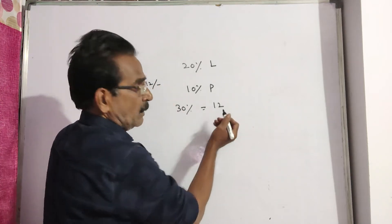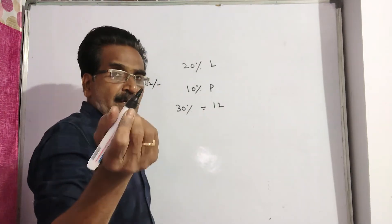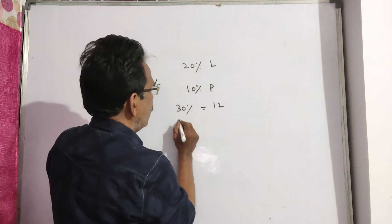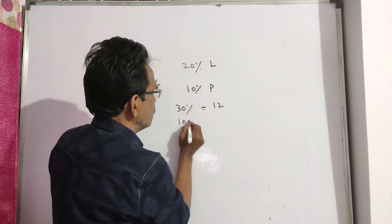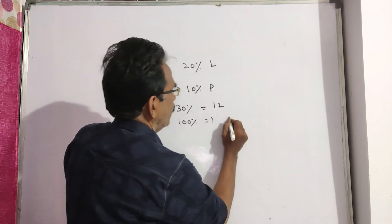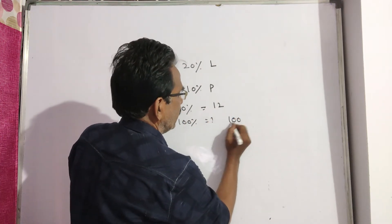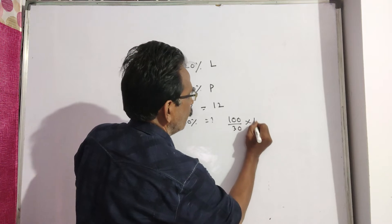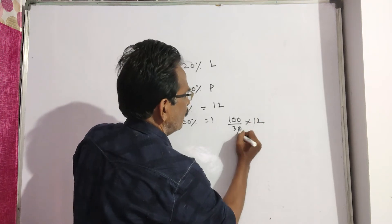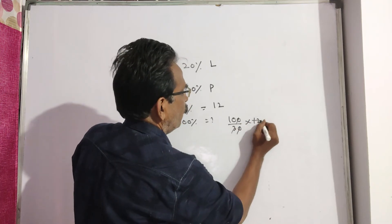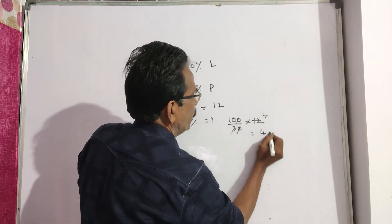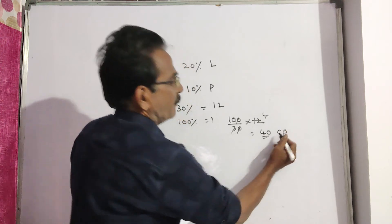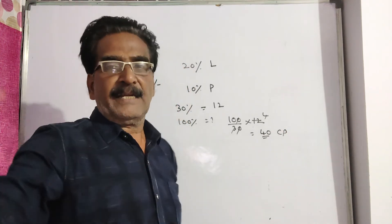So, 30% is equal to 12 rupees. Since cost price is 100%, we calculate: 100% = (100 / 30) × 12 = 40 rupees. So, 40 rupees is the cost price of the article.